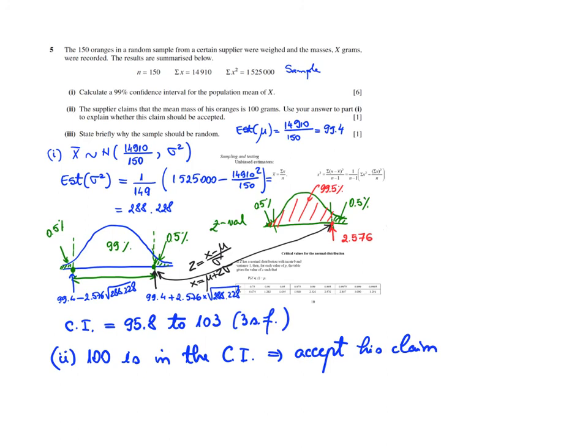And I am not asking this question, but now I know from what we learned that it is at 1% significance level, because the significance level is the area outside. I am not asking about that, but I am correct when saying that. So 100 lies within the confidence interval. Hence, yes, we accept his claim that the mean mass of his oranges is 100 grams.